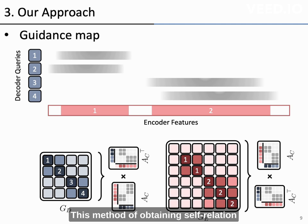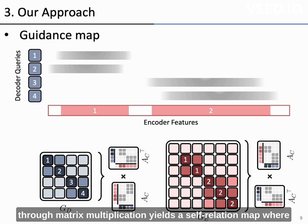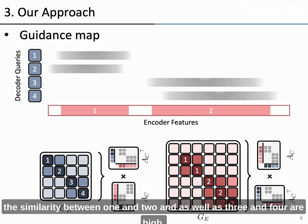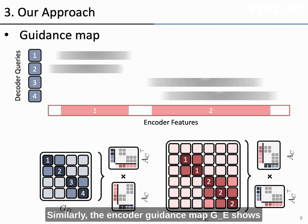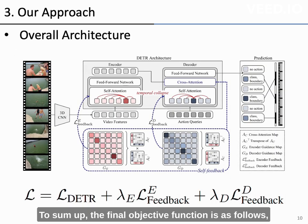This method of obtaining self-relation can be achieved through a simple matrix multiplication as described below. The decoder guidance map G_D obtained through matrix multiplication yields a self-relation map where the similarity between queries 1 and 2 as well as 3 and 4 are high. Similarly, the encoder guidance map G_E shows high similarity within region 1 and within region 2. To sum up, the final objective function is as follows, where lambda adjusts the weight of each loss function.